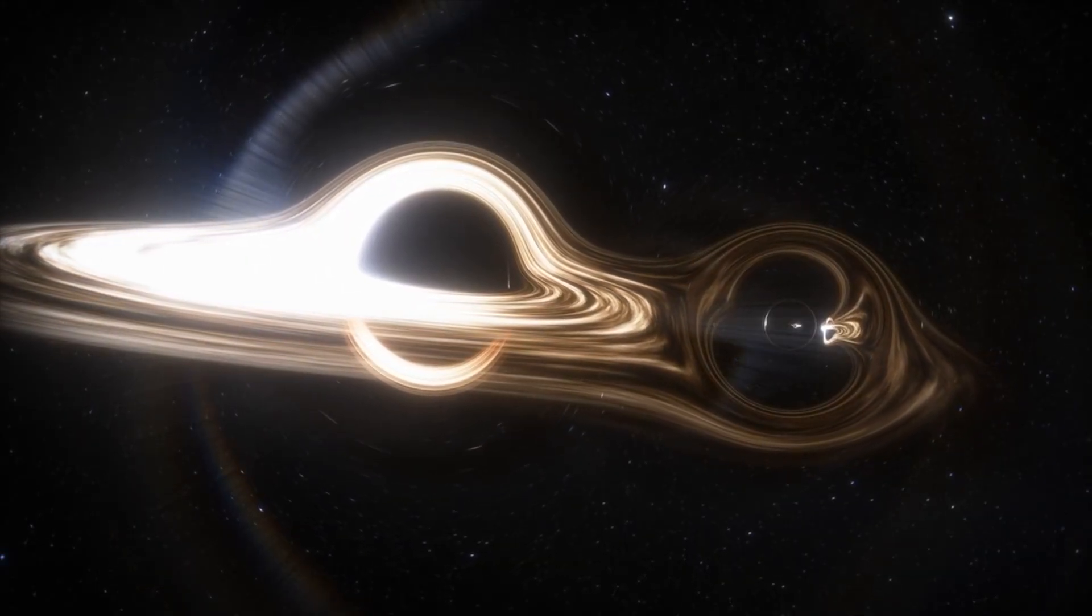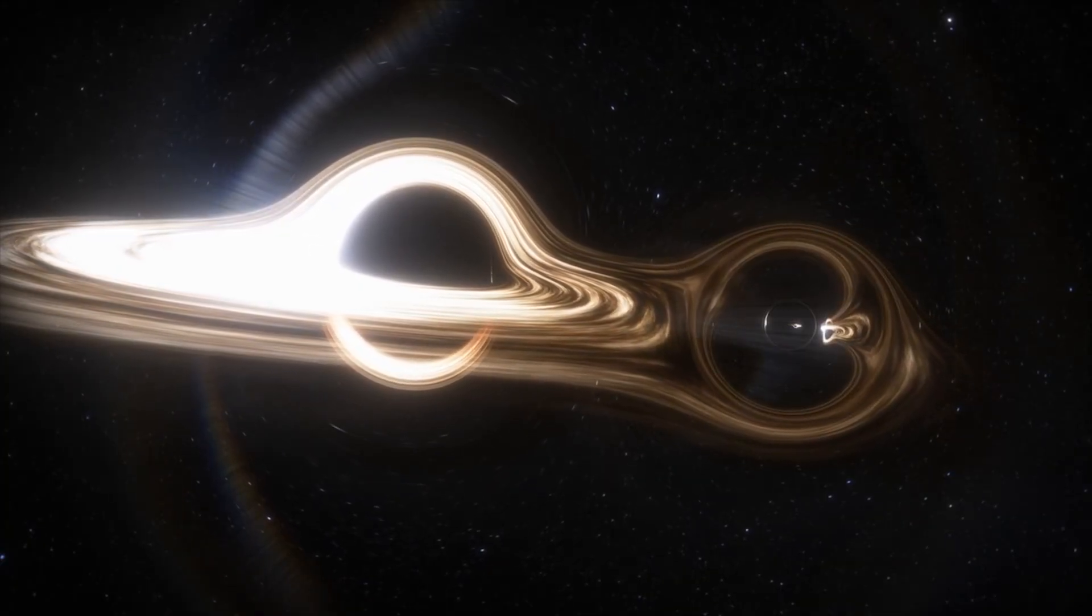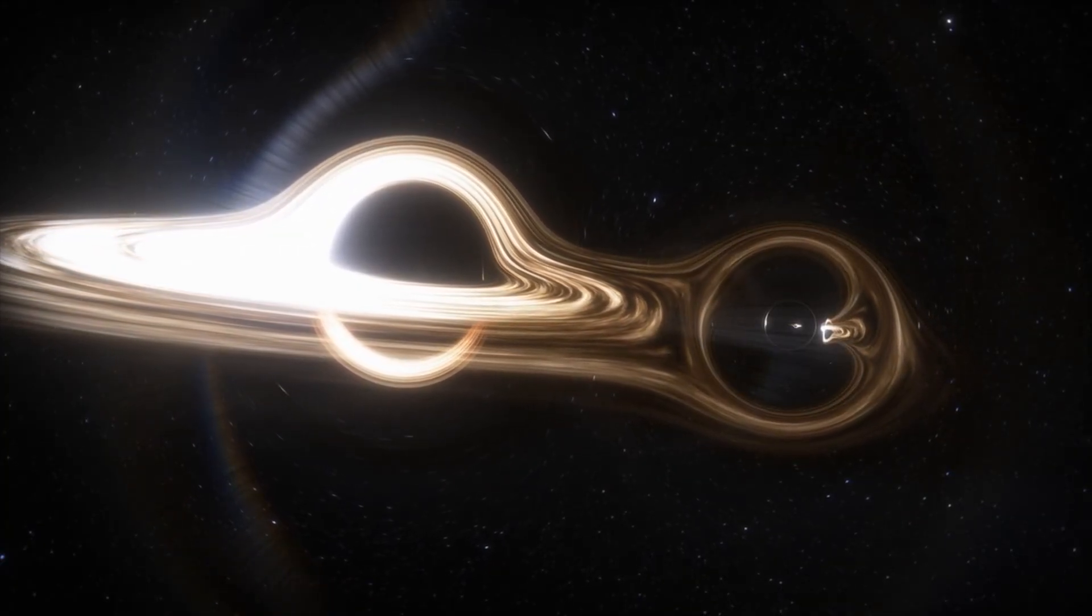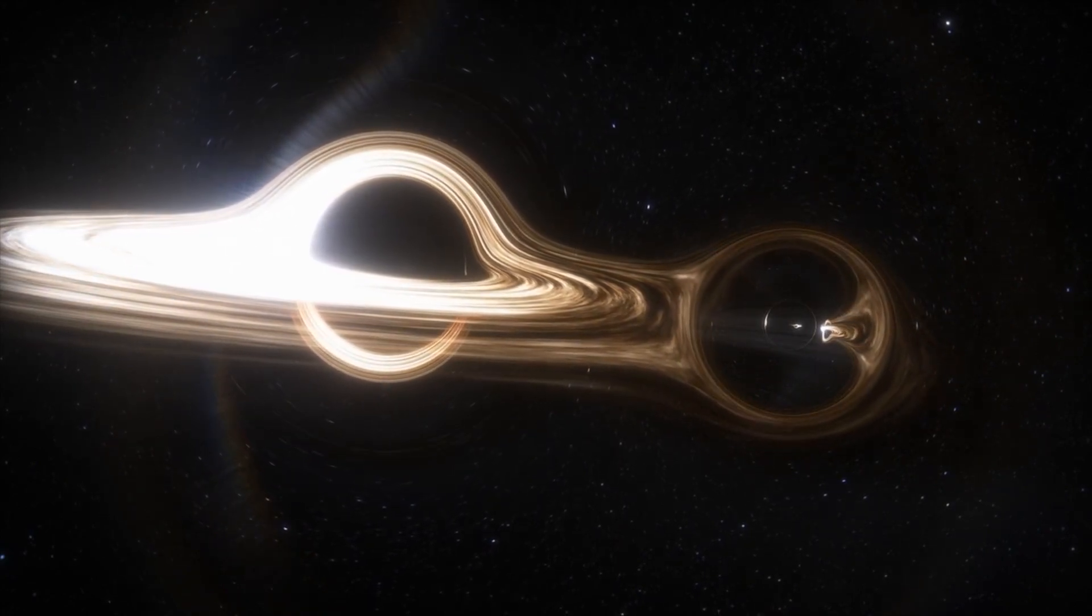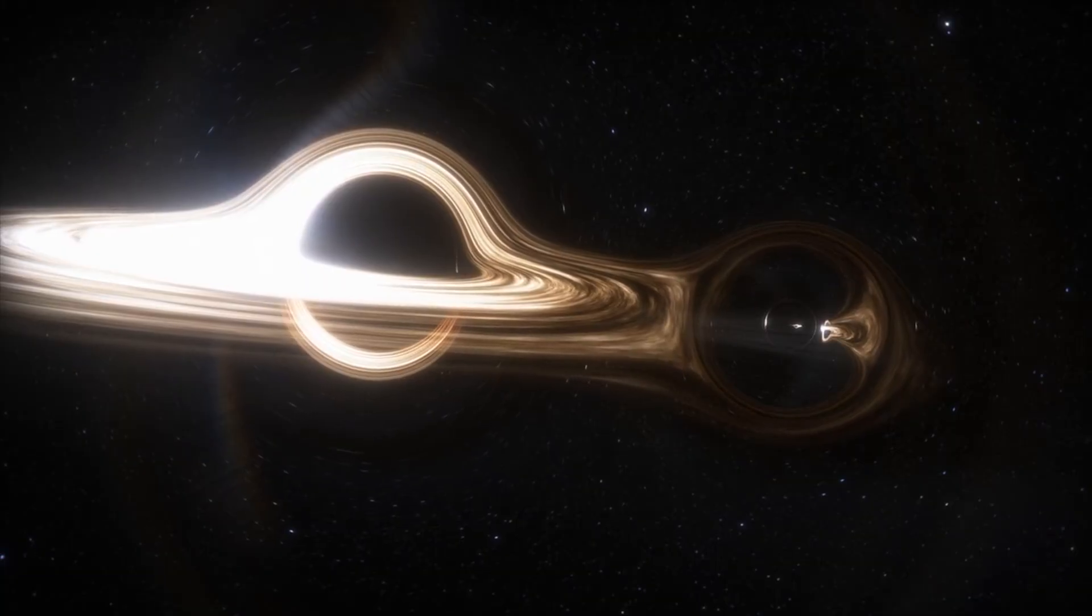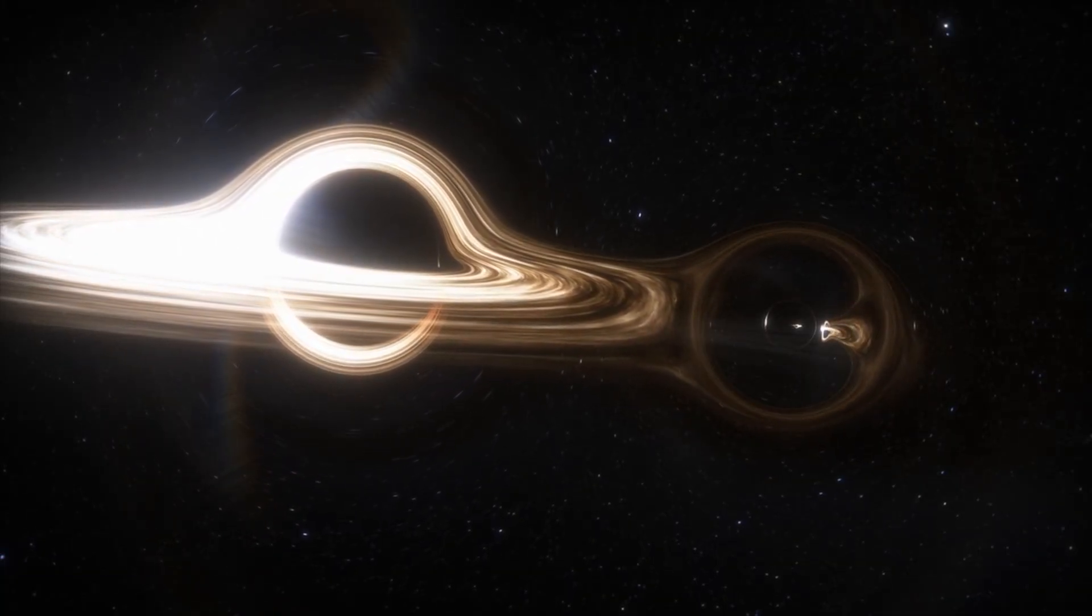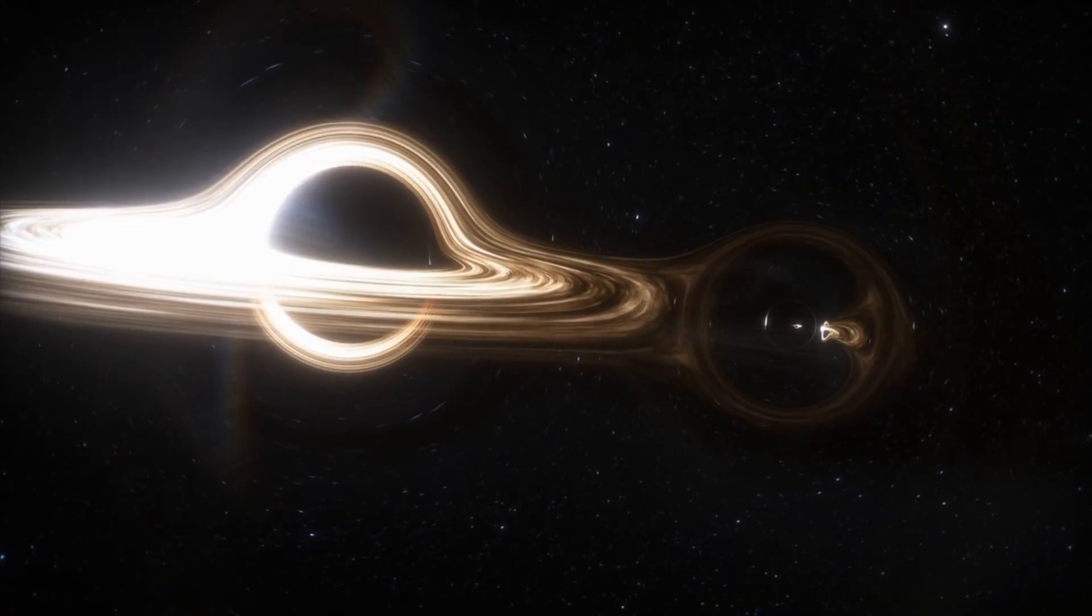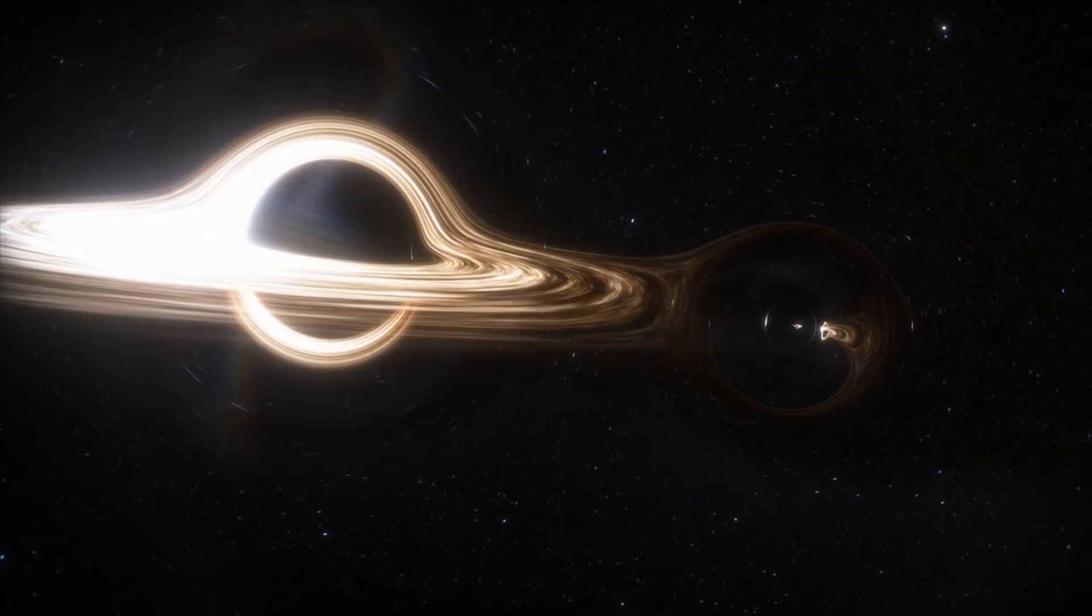Einstein felt that the prediction of such an object with gravity so intense that even light can't escape was absurd. He also felt quantum entanglement was also absurd. But as we know in modern times, both of these things exist and have survived everything skeptical scientists could throw at them. At this point, they must be, and the universe is again not beholden to working how we would like it to, neat and tidy.